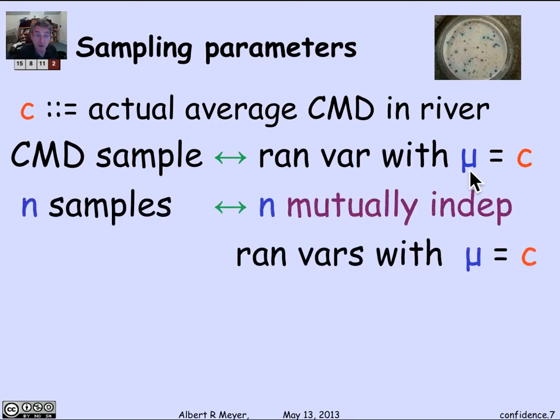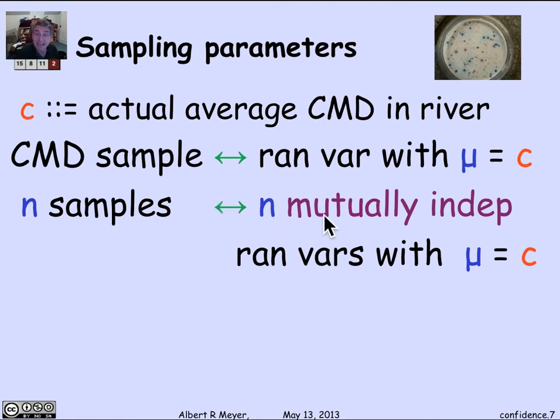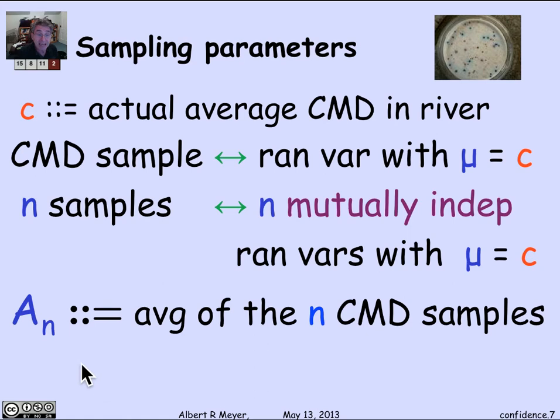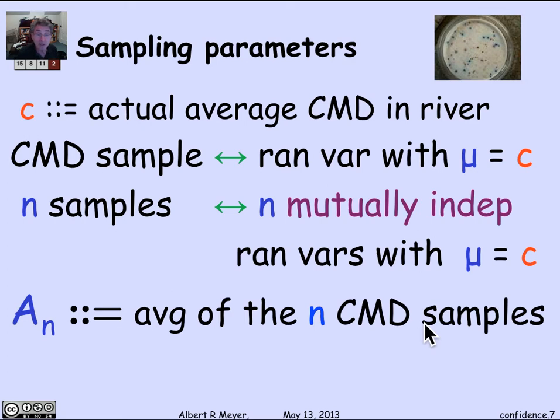We've defined by our sampling process a random variable with mean μ. In fact, we've done it with 32 variables. So n samples mean n mutually independent random variables, all with mean equal to the number we're trying to estimate. And A_n is the average of the n CMD samples.